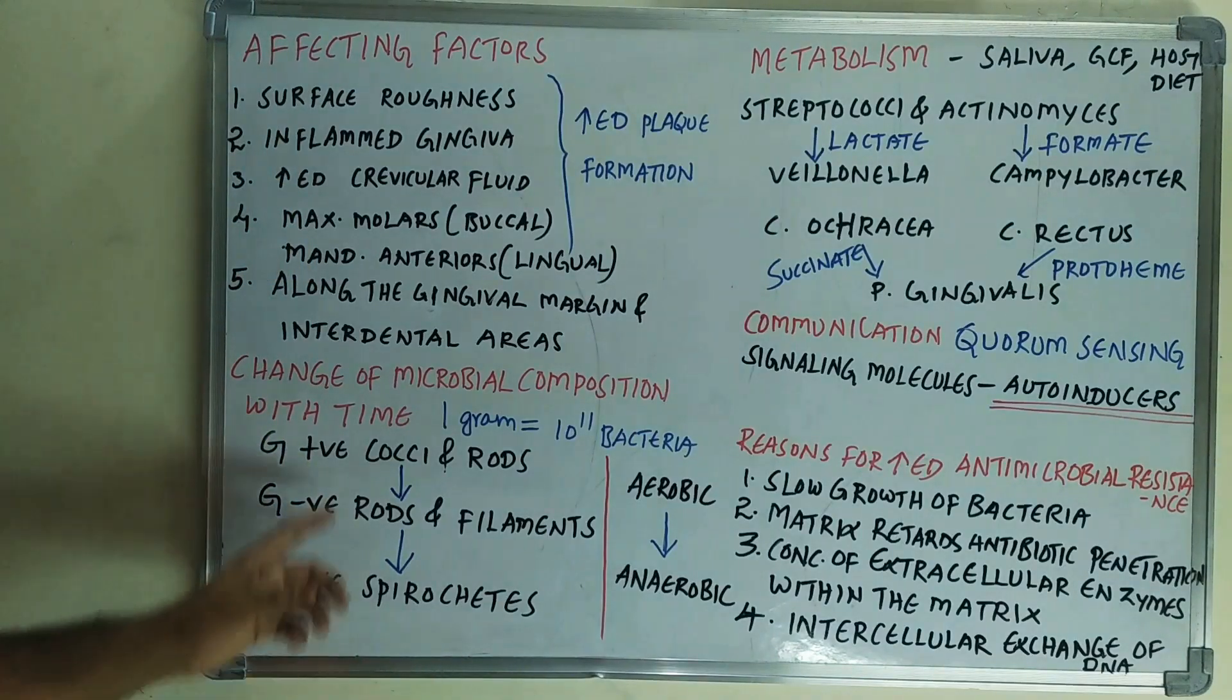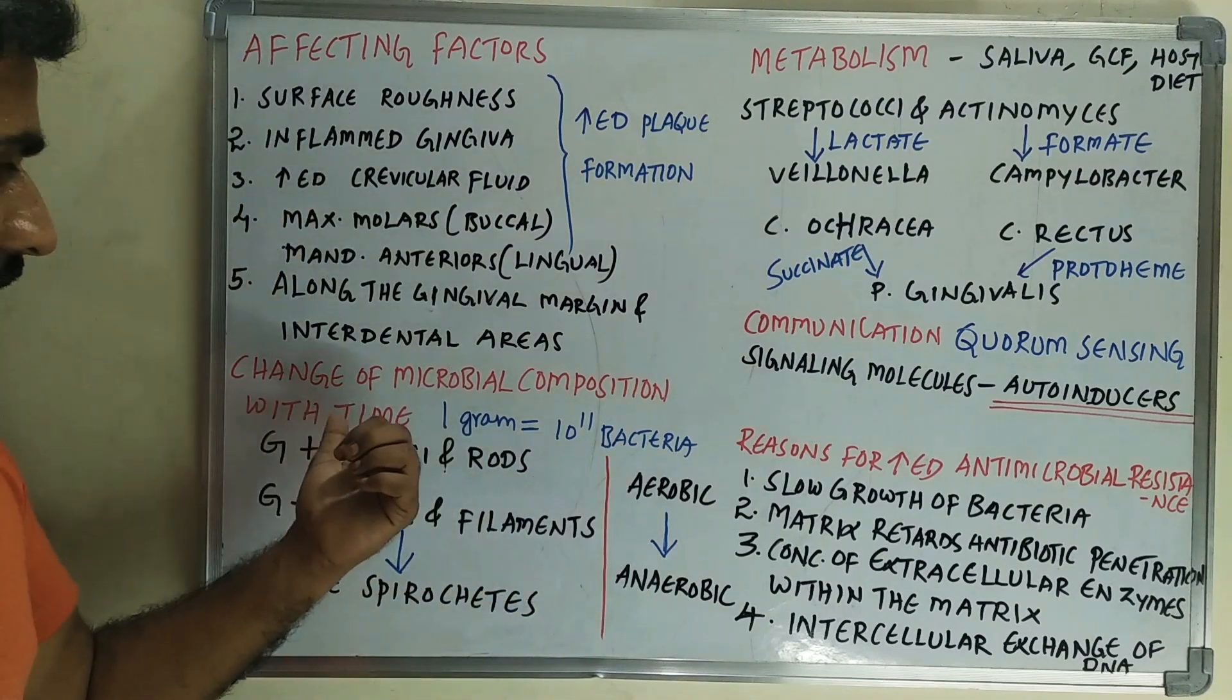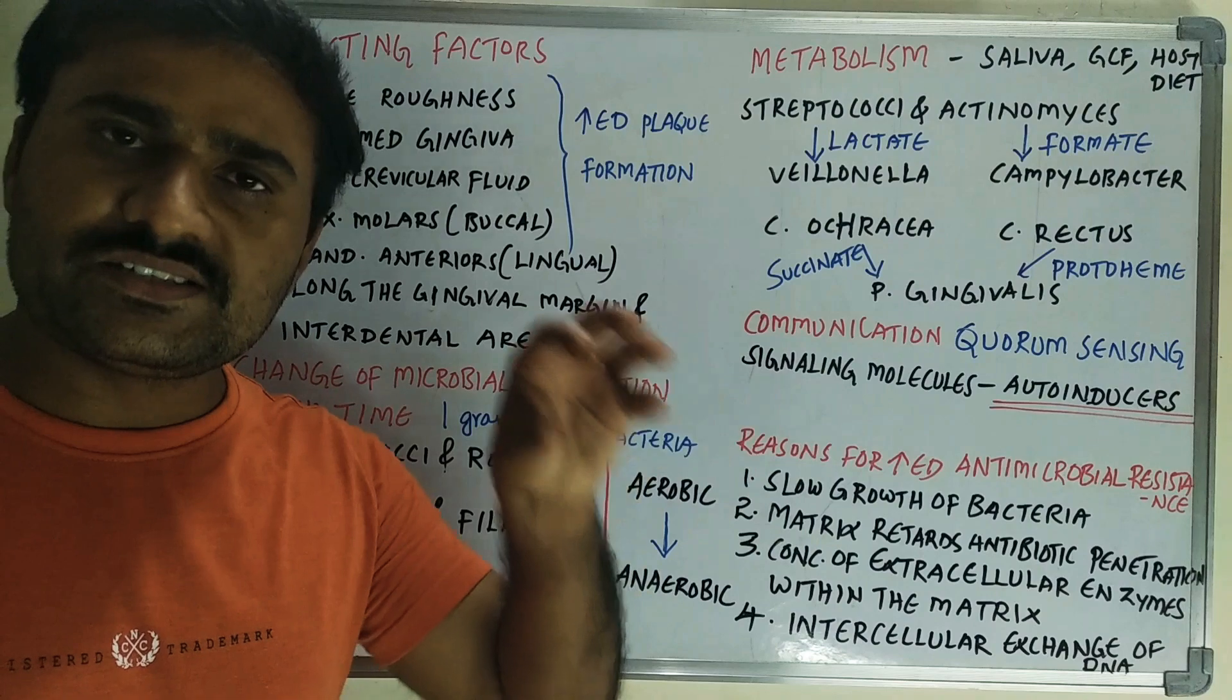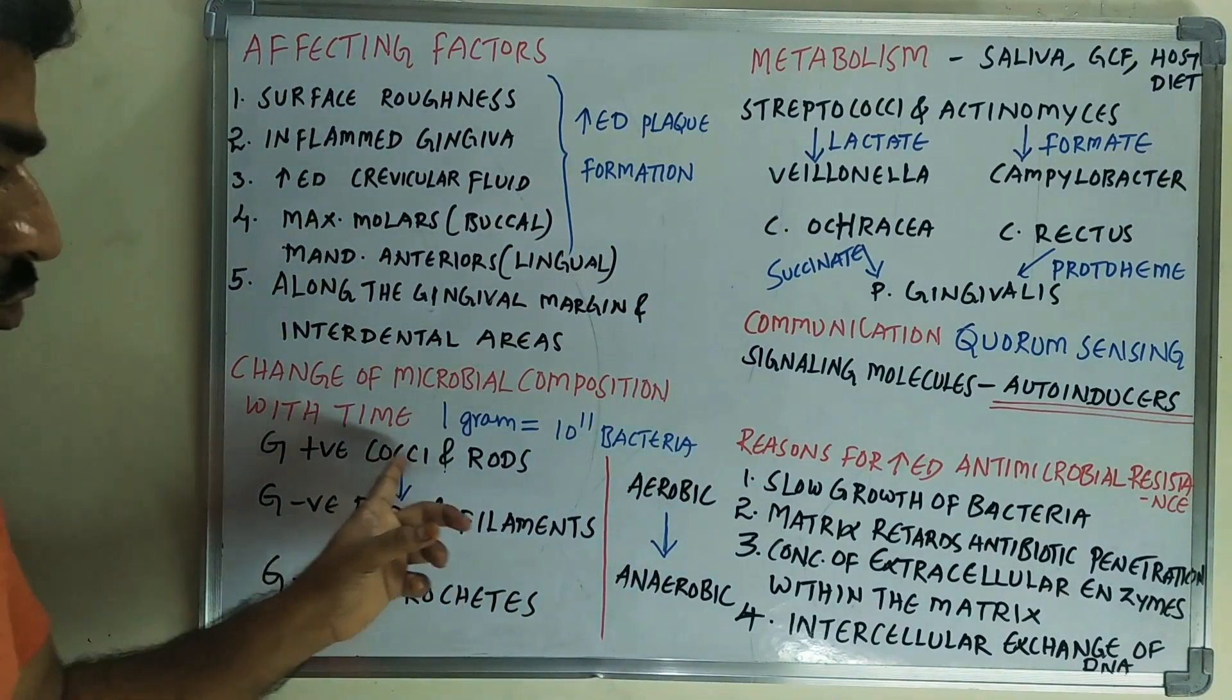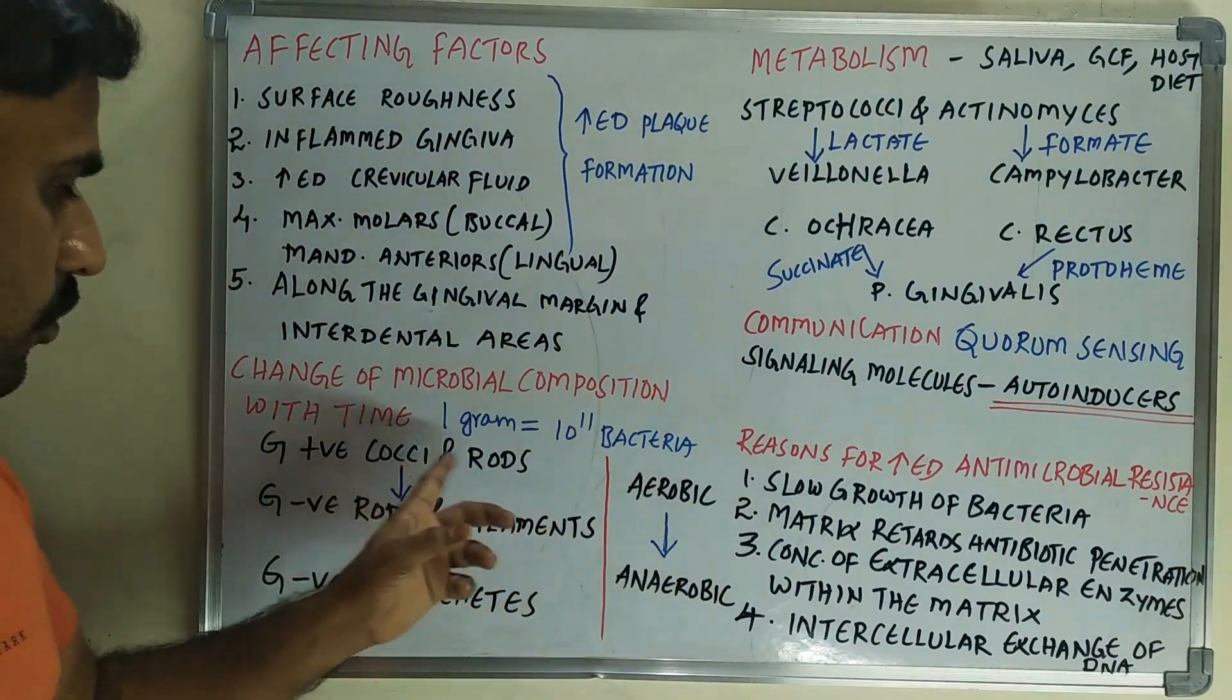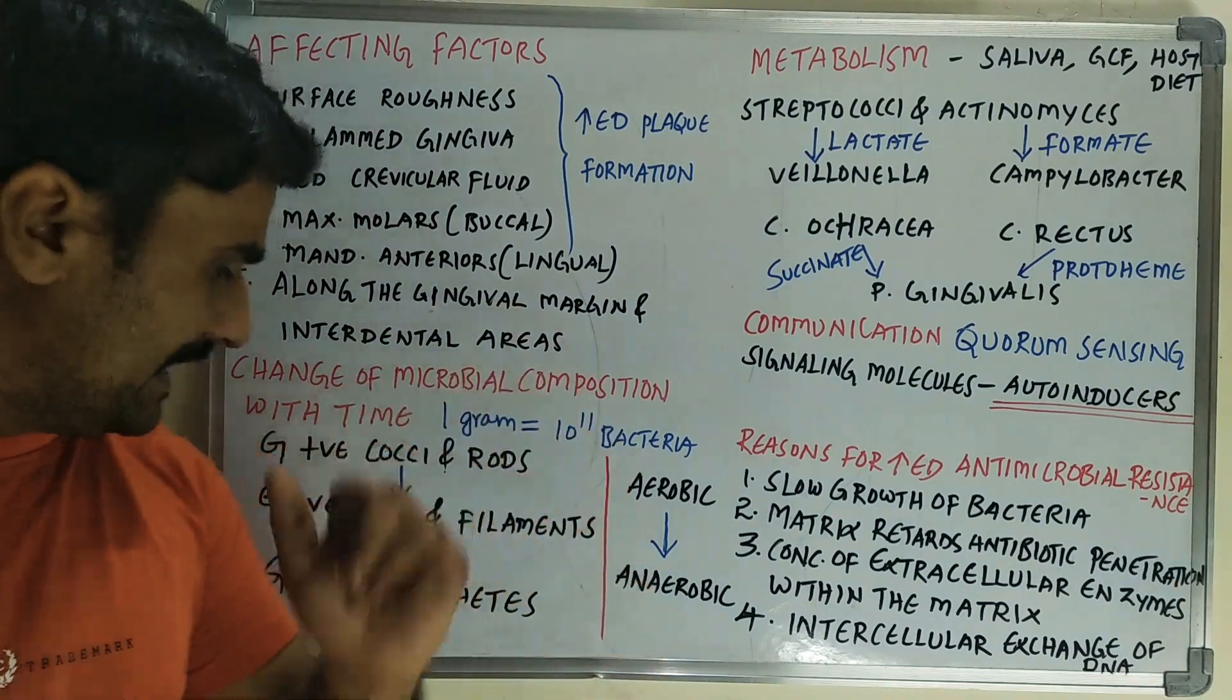Then change of microbial composition of plaque with time. Initially, in early days of plaque formation, there is increased gram-positive co-aggregation, then it will shift to gram-negative rods and filaments, and finally to gram-negative spirochetes.